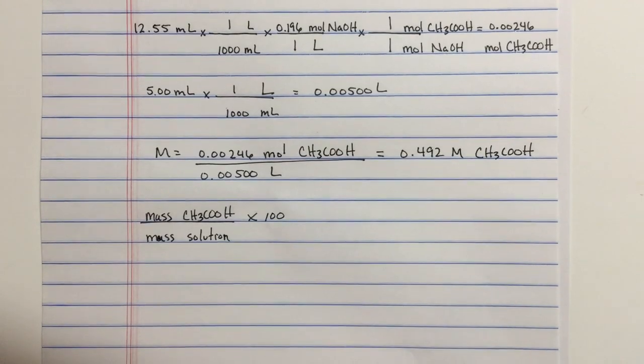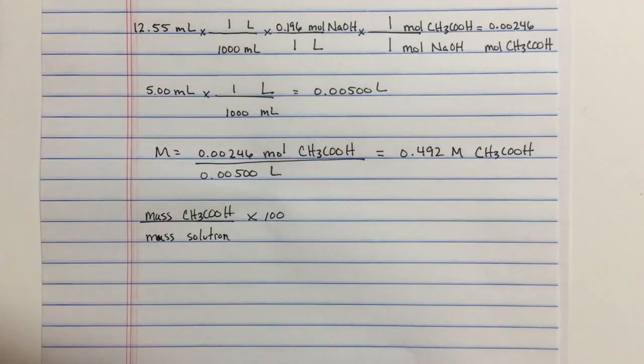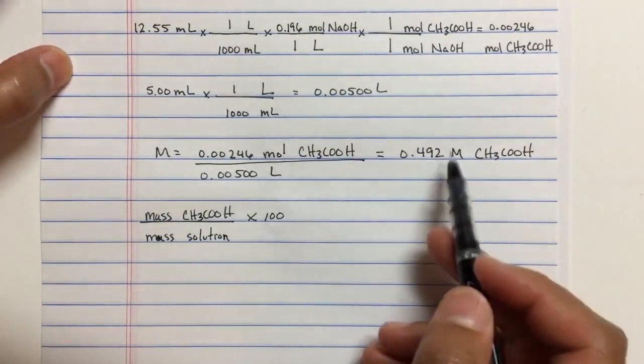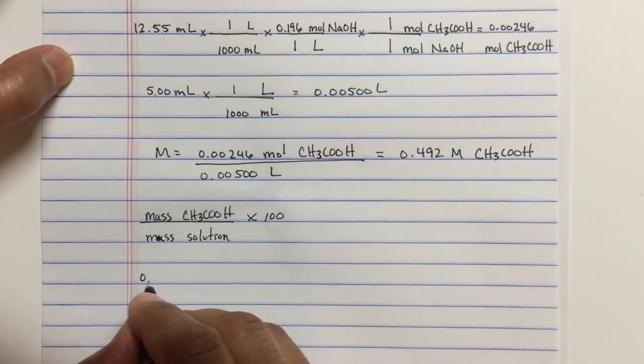Now, how do we solve this? Well, it's actually pretty easy. Let's look at the molarity. What does the molarity tell us? 0.492 moles per liter.